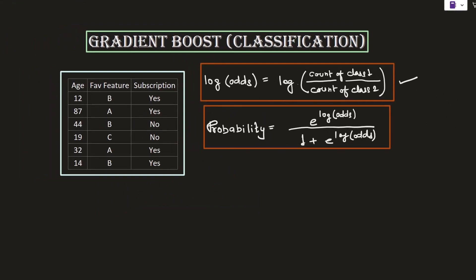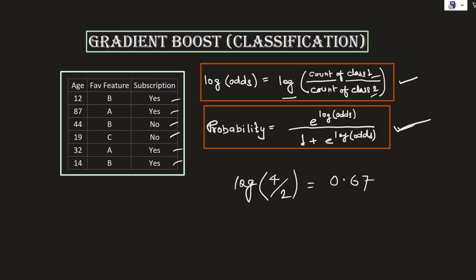The first formula is for the calculation of log odds and the second is to calculate the probability of the class. The log odds formula takes the log of the count of class 1 divided by the count of the other class. We have 4 yes values and 2 no values, so log of 4 divided by 2 gives approximately 0.67. Then applying the probability formula — e to the power 0.67 divided by 1 plus e to the power 0.67 — gives a value of approximately 0.7.